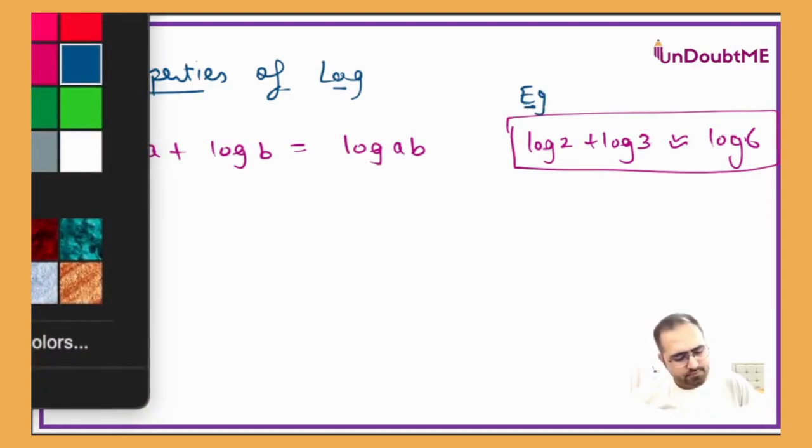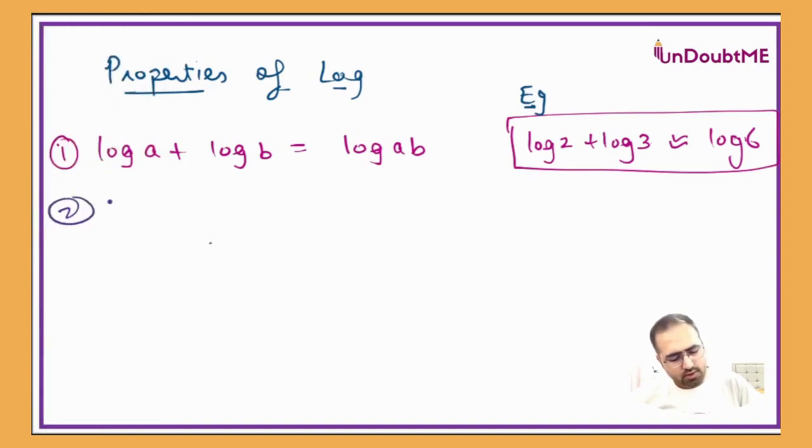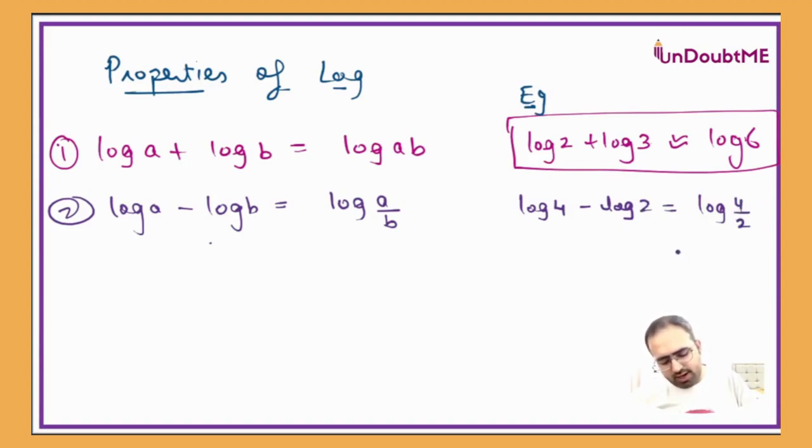Second property: log of a minus log of b is equal to log of a over b. Same application, just for an example if I have log 4 minus log 8, then it can be written as log of 4 over 2, and that will be log of 2.